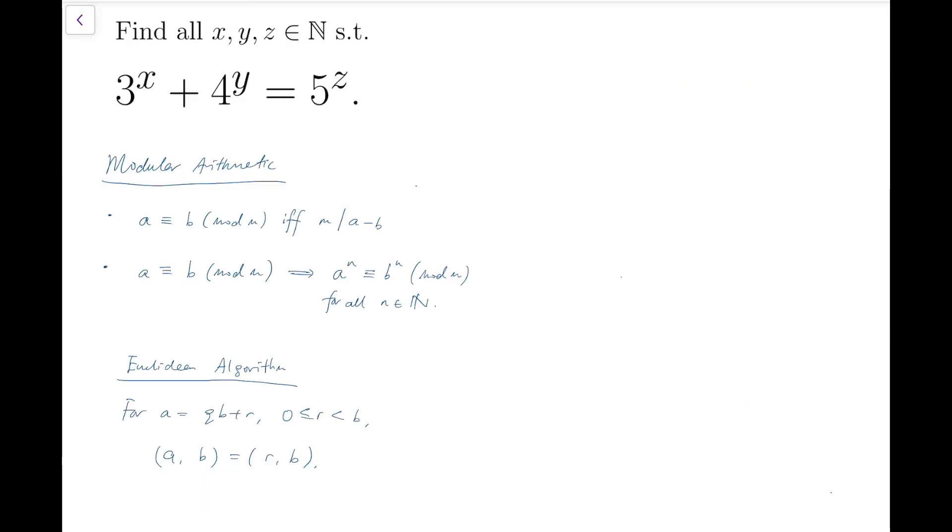This problem looks special to me because the base of the three terms, 3, 4, and 5, are primitive Pythagorean triples, which means 3 squared plus 4 squared equals 5 squared. So we can quickly tell that x, y, and z to be all equal to 2 as a solution triple.